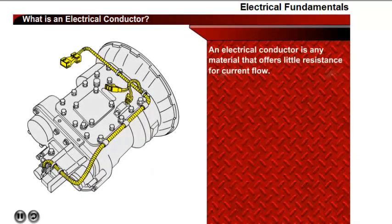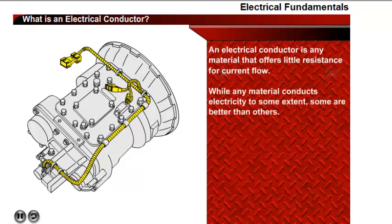An electrical conductor is any material that offers little resistance to the flow of electric current through the material. While all materials conduct electricity to some extent, some are better conductors than others. Metal, such as copper, is a typical conductor.